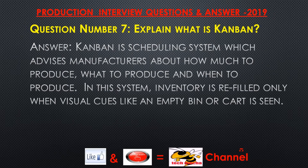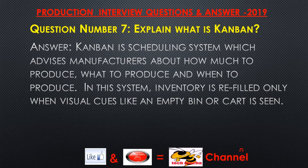Question number seven: Explain what is Kanban? Answer: Kanban is a scheduling system which advises manufacturers about how much to produce, what to produce, and when to produce. In this system, inventory is refilled only when visual cues like an empty bin or cart are seen.